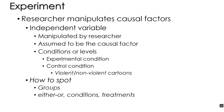We break down the independent variable into conditions or levels. In a very basic experiment, you need at least two levels: an experimental condition and a control condition. Our example experiment contains two conditions — a violent and a non-violent cartoon condition — so the experimental condition would be violent cartoons, and the control condition would be non-violent cartoons.